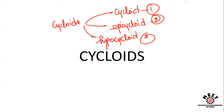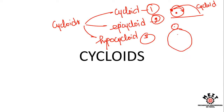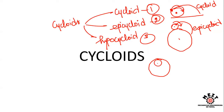A cycloid is formed when one circle rolls over a flat surface. An epicycloid is formed when one circle rolls over the circumference of a bigger circle — the point traced on the rolling circle gives the epicycloid. A hypocycloid is formed when a smaller circle rolls inside a larger circle, and the circumference point traces the hypocycloid.